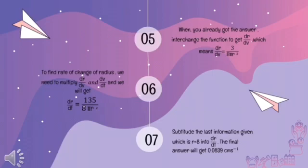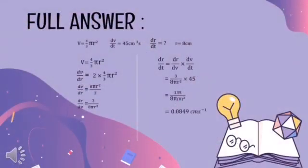The seventh step: substitute the given value r equals 8 into dr/dt. The final answer is approximately 0.0849 cm per second. Here is the full answer for question 2 — following all seven steps gives the final answer of 0.0849 cm per second.